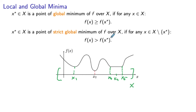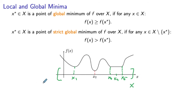We call this global minimum strict if there is no other point in the feasible region where f of x has the same value — so for all points other than x star, f of x is strictly greater than f of x star. Whenever you have a strict global minimum, the global minimum is unique, because if you had two global minima, their objectives would match and neither would be strict. According to the definition, the global minimum must be such that no other point in the whole feasible set — not just a small neighborhood — can match the objective at the point of strict global minimum.